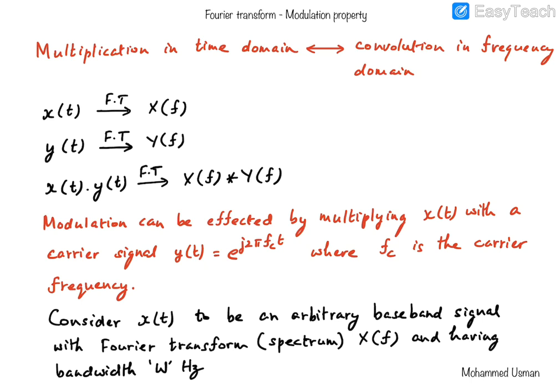We are going to use this property of the Fourier transform along with another property discussed in another video: that the convolution of any signal with the delta function produces the same signal — that is, the delta function is an identity for the convolution operation. Extending that idea further, the convolution of any signal with a shifted delta signal results in the same signal also shifted in the same direction and amount as the shifted delta function.